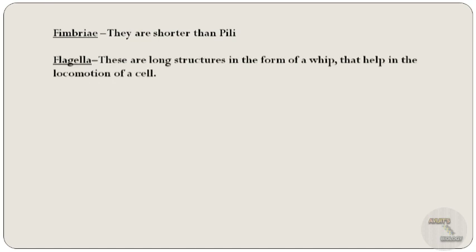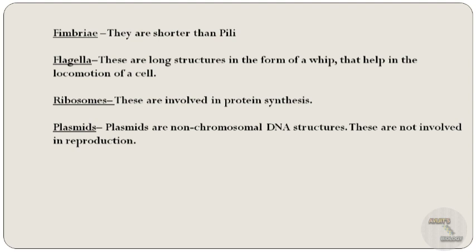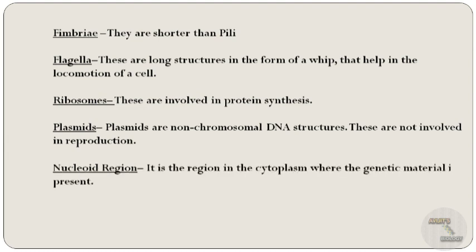Some prokaryotes consist of flagella — in singular, flagellum. These are long whip-like structures that help in the locomotion of a cell. A prokaryote can have one or several flagella, localized to one pole or spread out around the cell. The cell organelles involved in protein synthesis are known as ribosomes. Non-chromosomal DNA structures present inside a prokaryotic cell are known as plasmids, and these plasmids are not involved in reproduction.